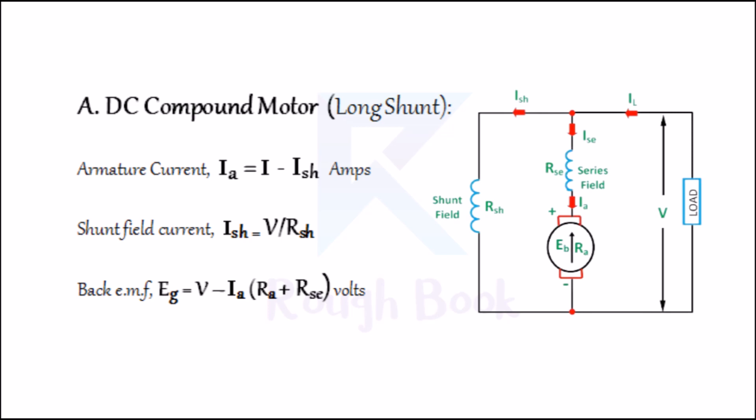13A: Long shunt DC compound motor. Depending on the way in which the two field windings are connected, the compound motors can be either long shunt or short shunt. From the figure, this is a long shunt DC compound motor, where armature current IA = I − ISH. Shunt field current ISH = V / RSH. Back EMF EB = V − IA(RA + RSE).